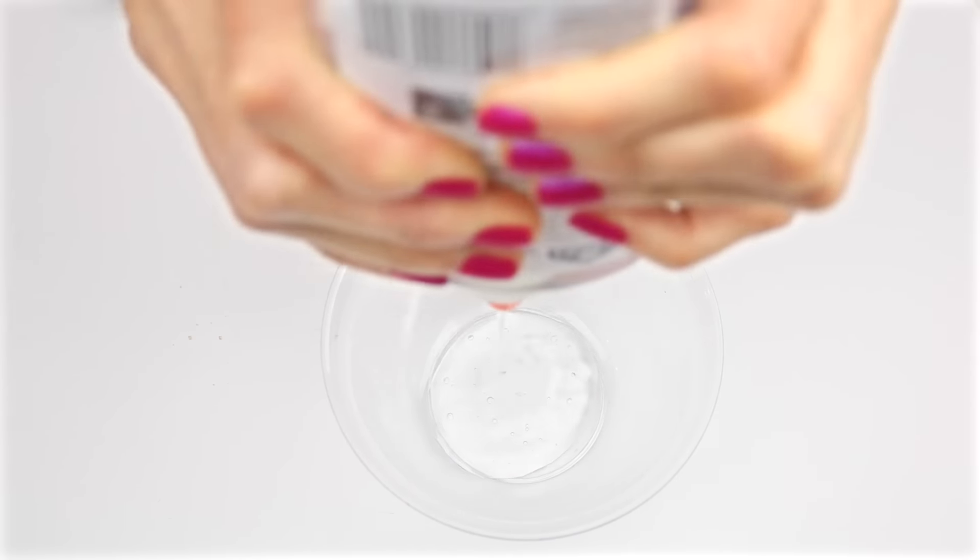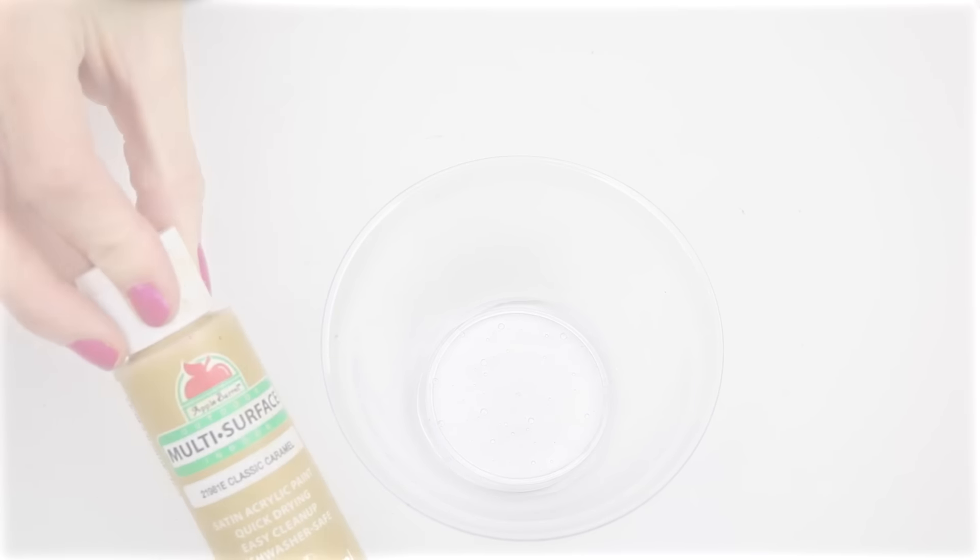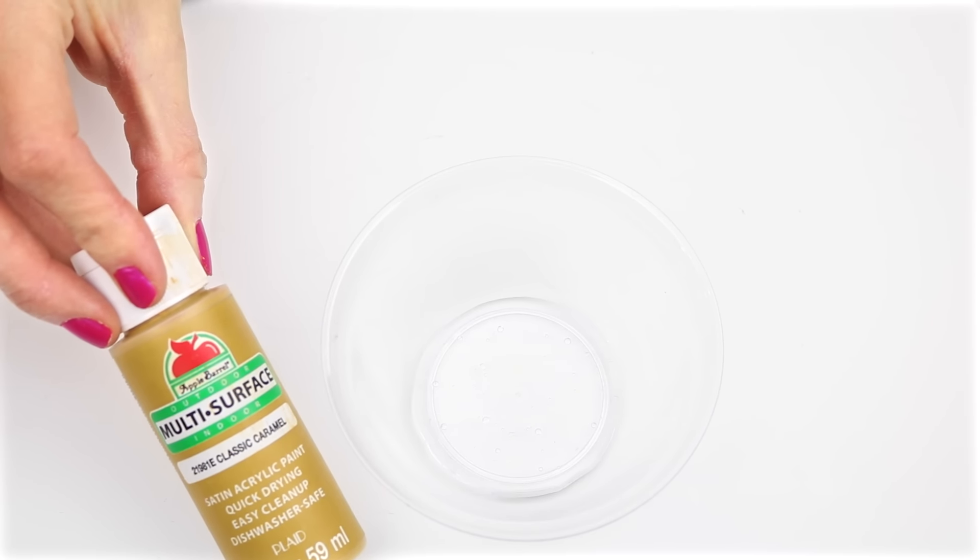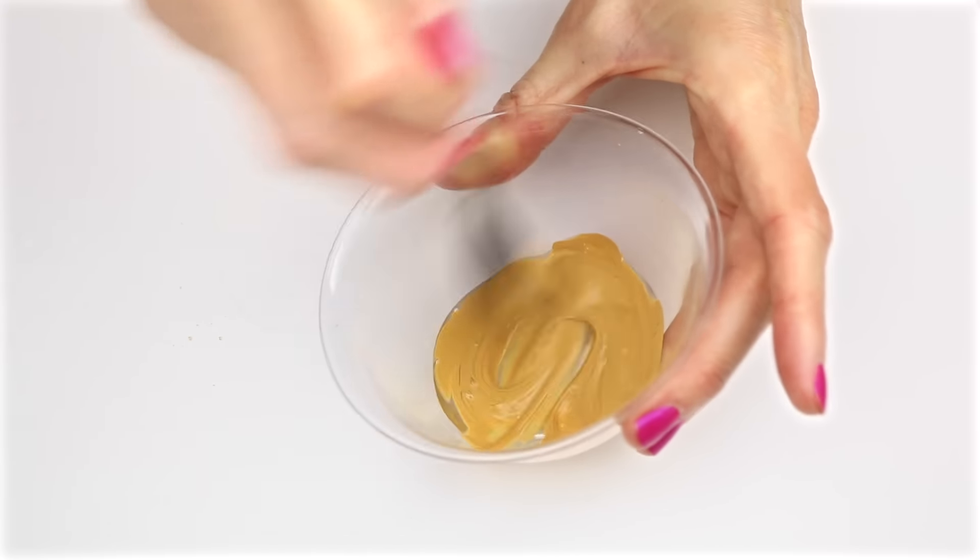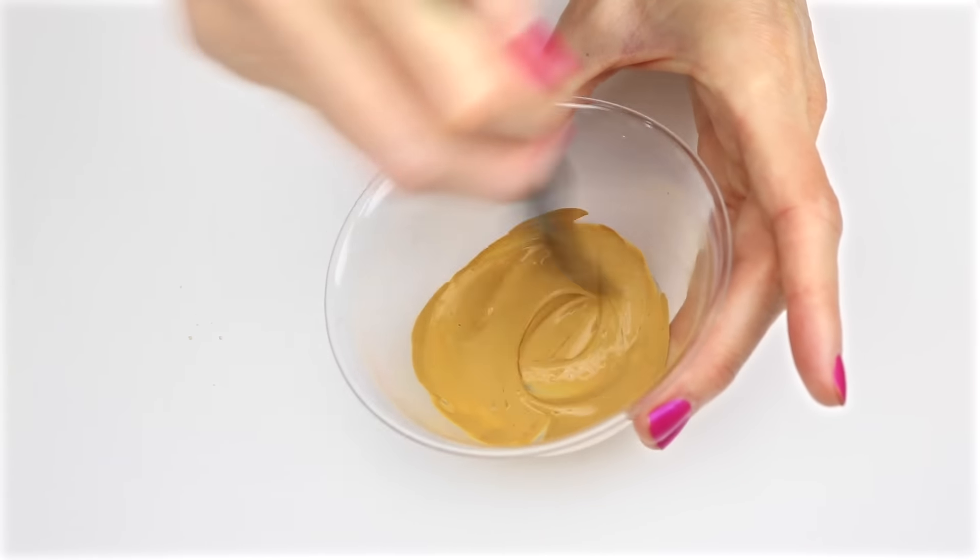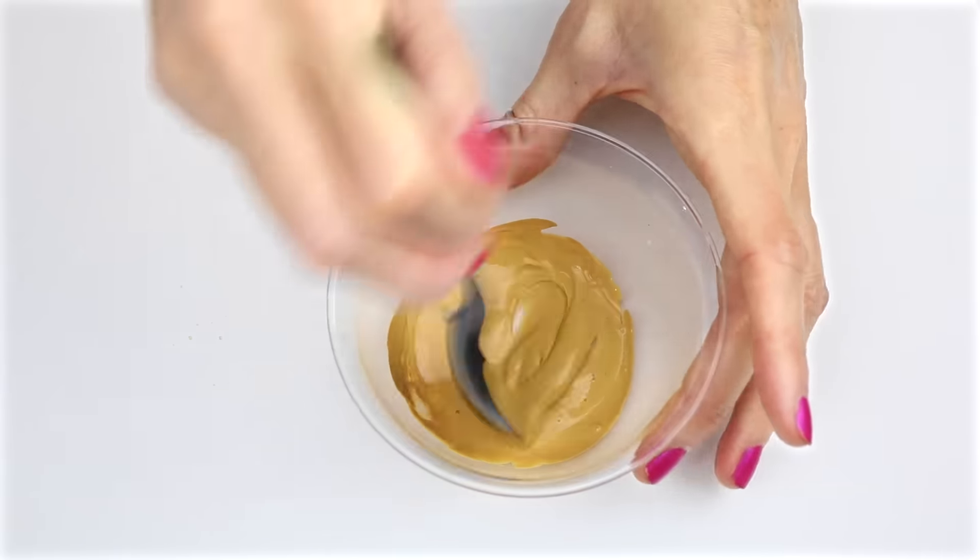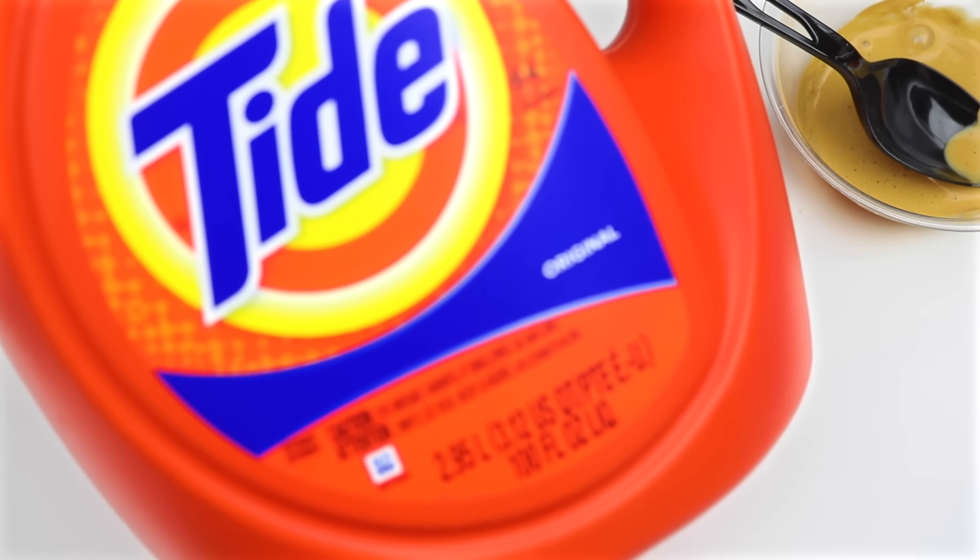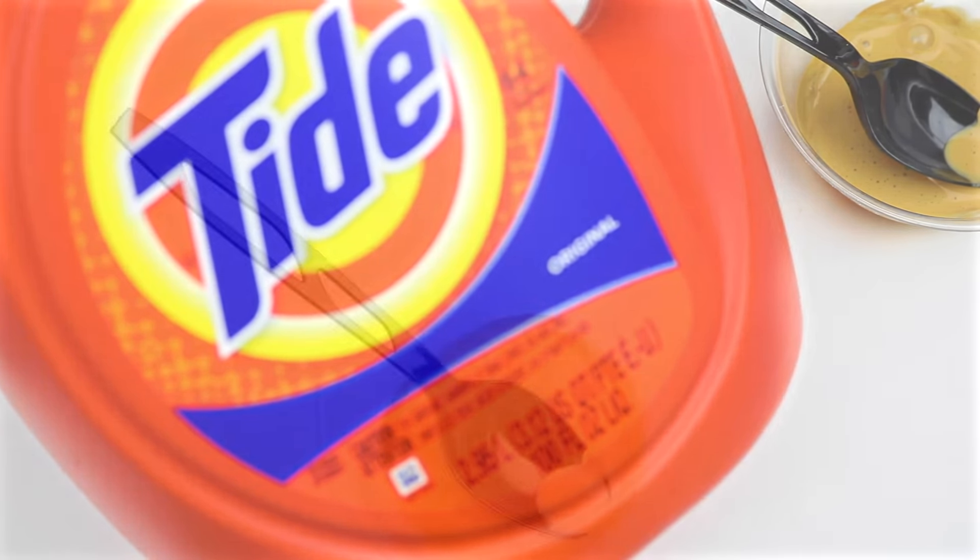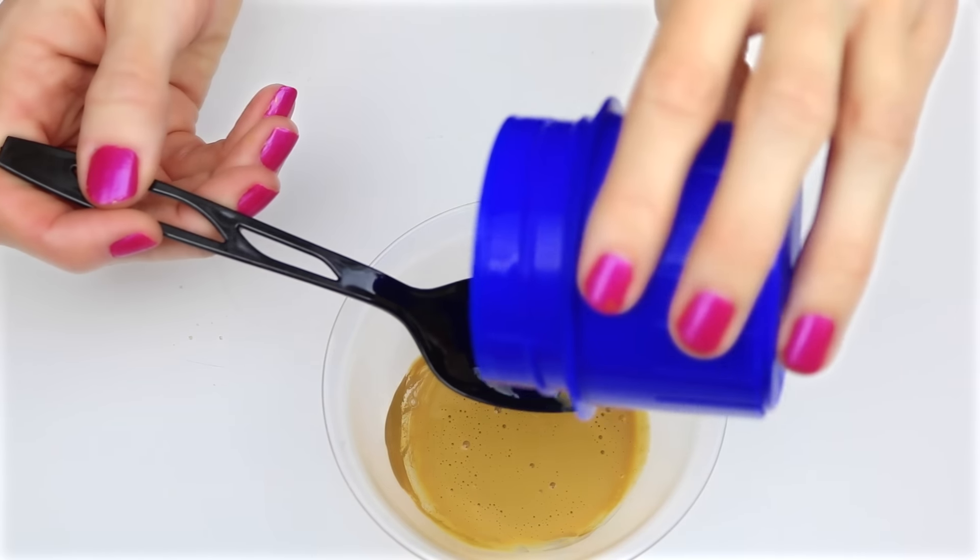To make the slime to go inside, I'm going to use some clear glue. And I'm also going to use some caramel color acrylic paint. Add those two together and stir them up. To form the slime, I'm going to use some Tide laundry detergent. I just added a little bit at a time until it formed slime.